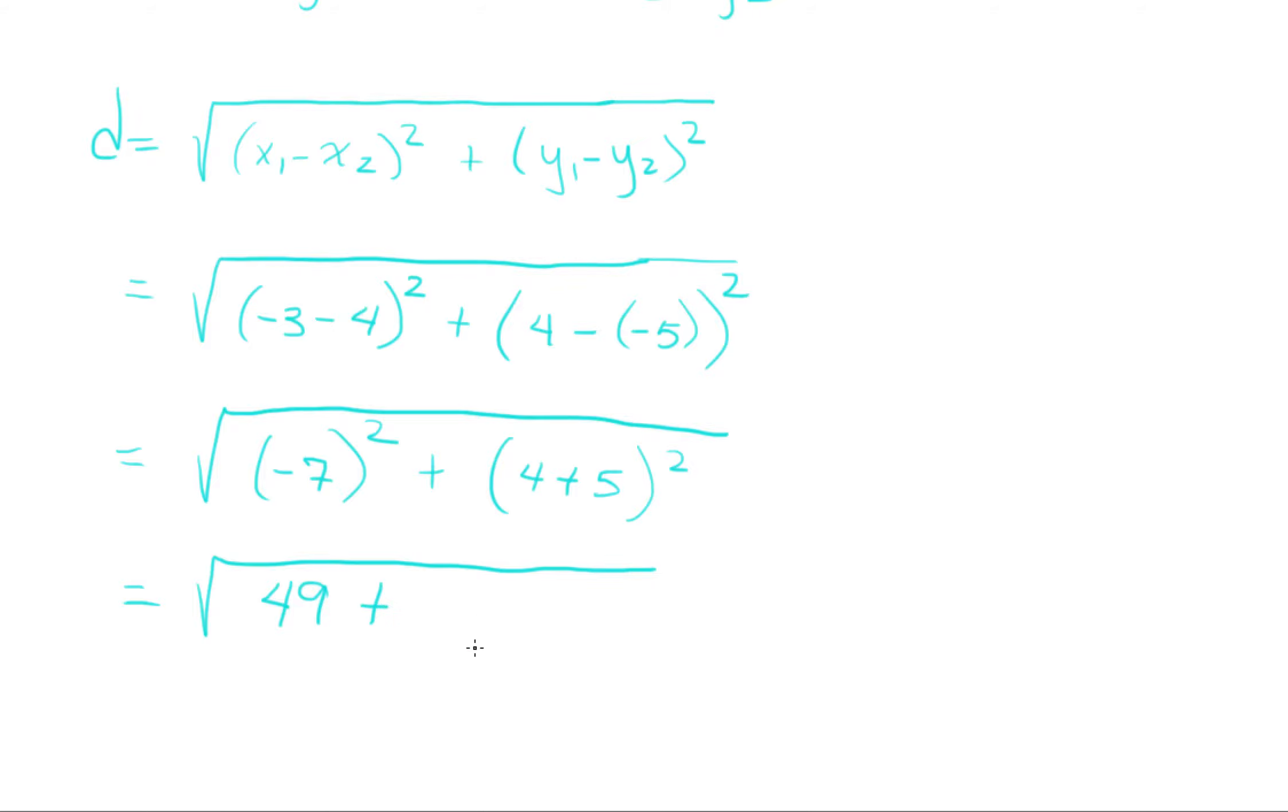4 plus 5 is 9. Now again, what is 9 squared? It's not 18. It's 9 times 9, which is 81.